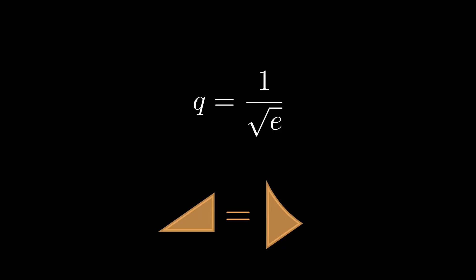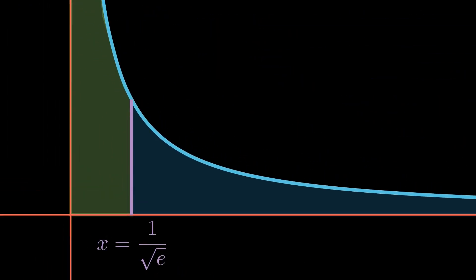There we have it. If we draw a vertical line at x equals 1 over the square root of e, we will perfectly cut this infinite area in half. The area to the left and the area to the right of 1 over the square root of e are equal to each other. I think that's a beautiful result.